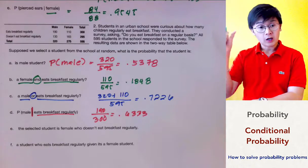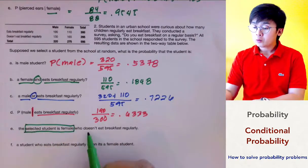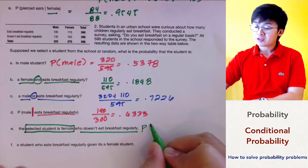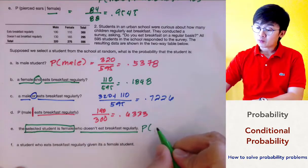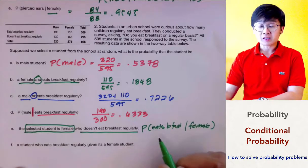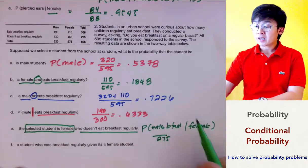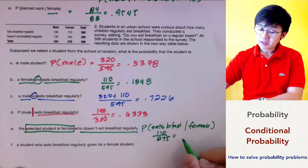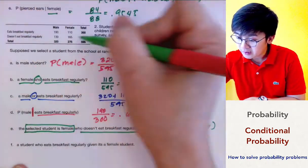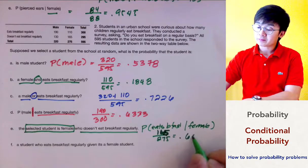For problem letter E, you need to make sure how the conditional statement works. The selected student is a female who doesn't eat breakfast regularly, which means the given condition is that the student selected is a female. So if we write this in conditional probability notation, it will be: doesn't eat breakfast given female. The denominator will be the number of female students, which is 275. The female students who don't eat breakfast is 165, so 165 over 275 gives us 0.60 or 60%.